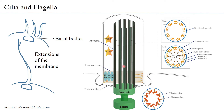A more elaborate structure reveals that, apart from the nine doublet microtubules at the periphery, at the center there is a pair of two microtubules connected to each other. All nine doublets are associated with this central pair through structures called radial spokes.